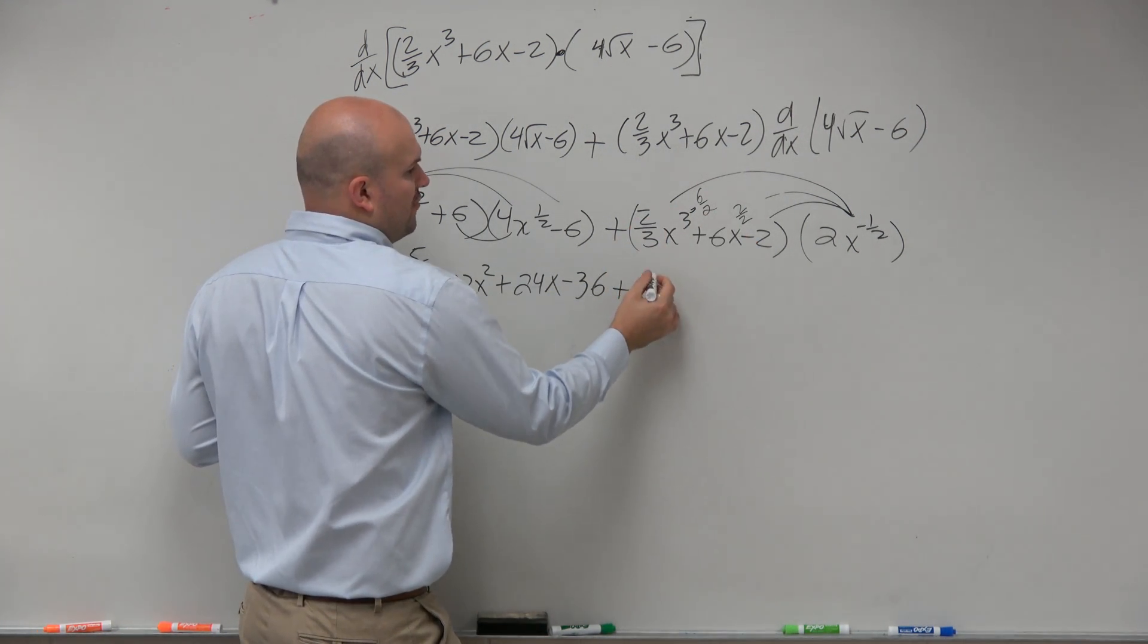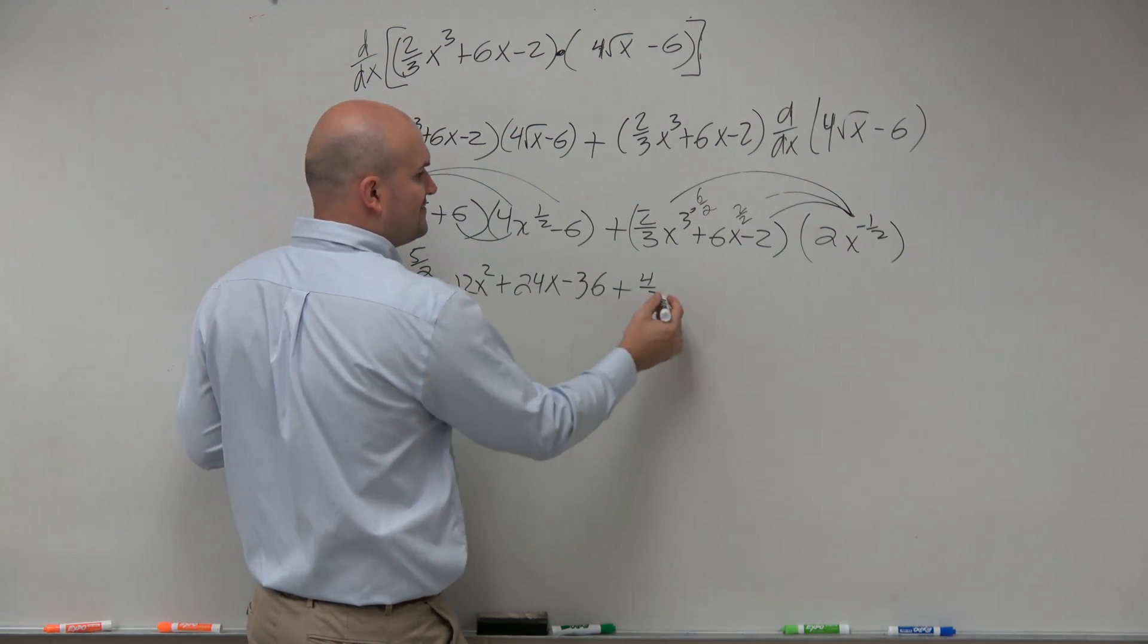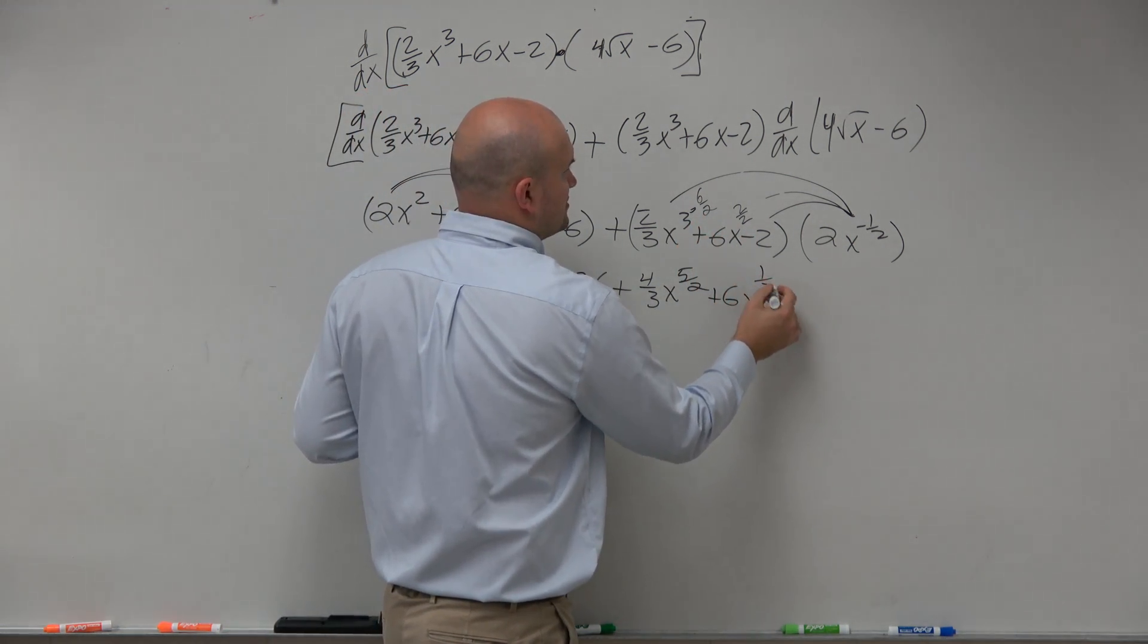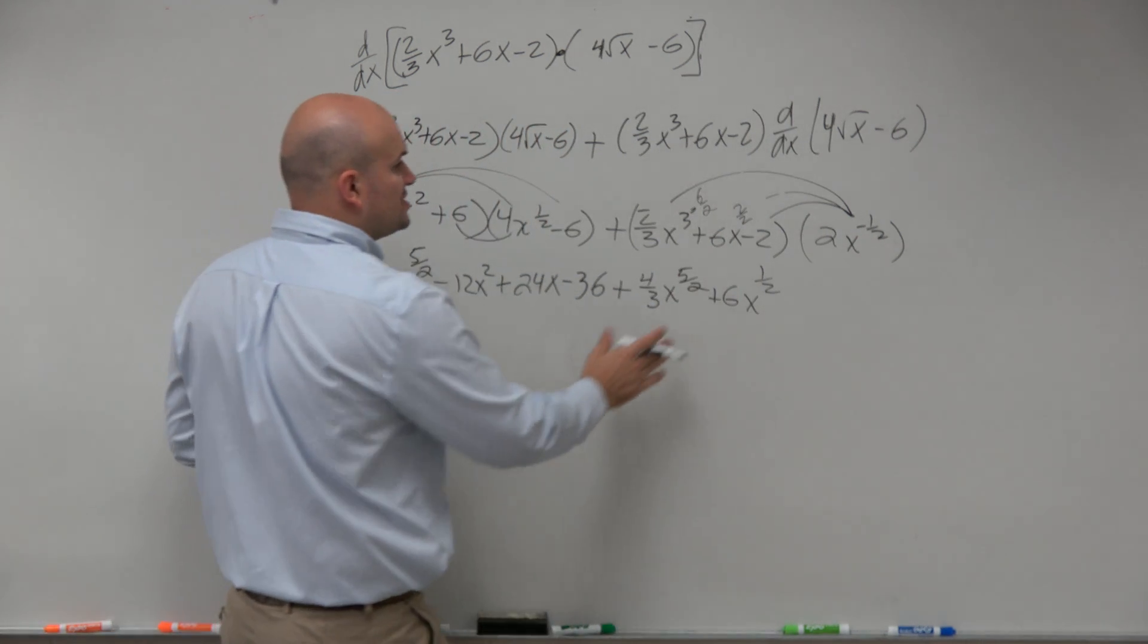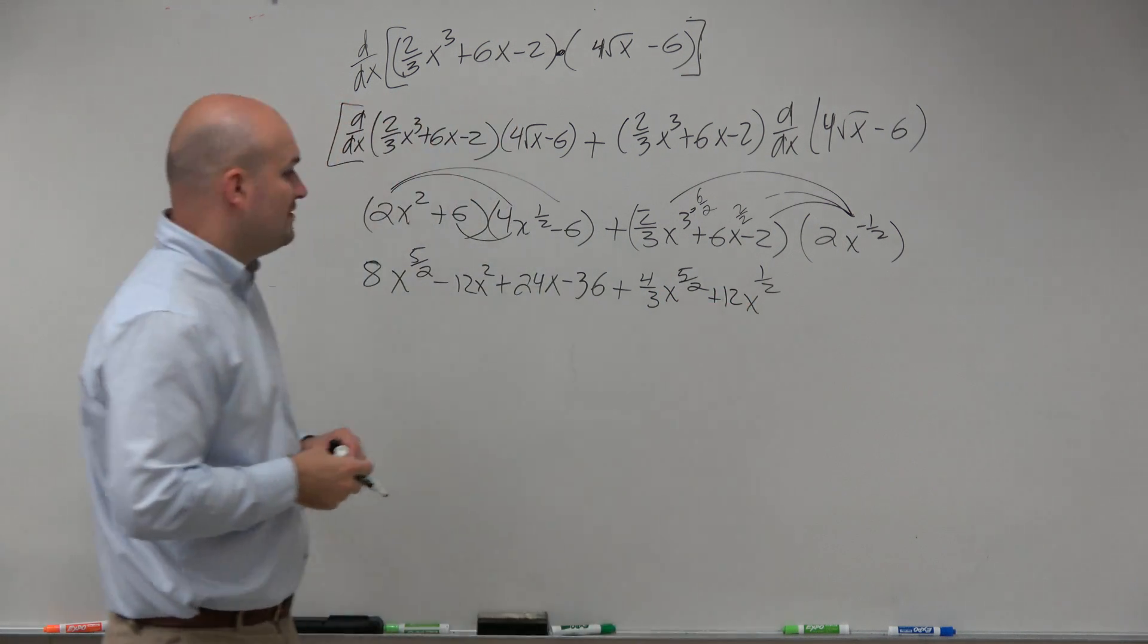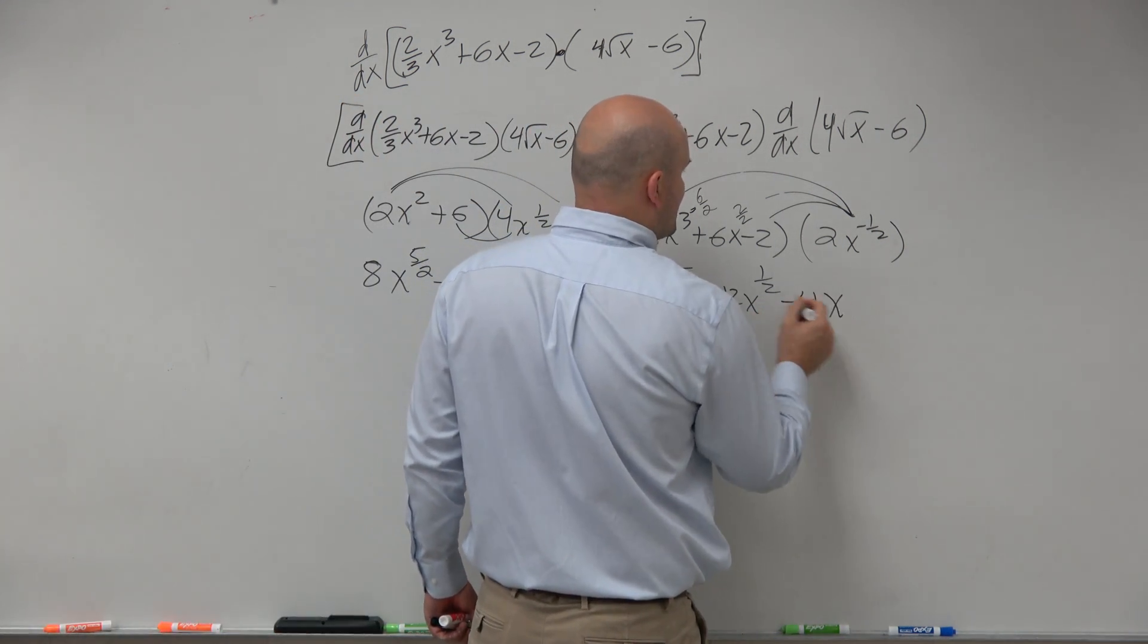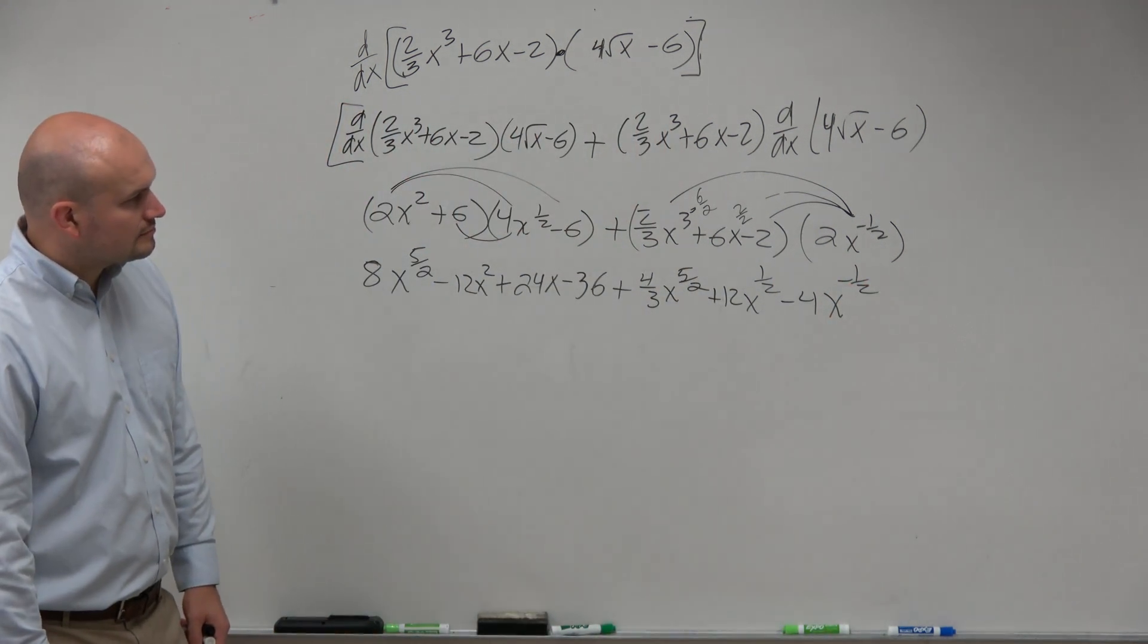So here I'm going to have (4/3)x^(5/2), here I'm going to have +6x^(1/2), and then this last one—nope, I'm sorry, that's going to be 12—12x^(1/2), and then last but not least, we'll have -4x^(1/2).